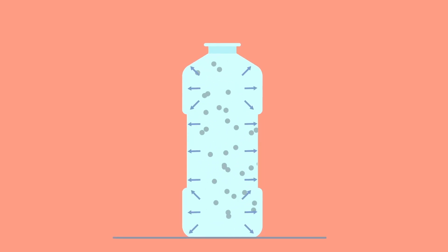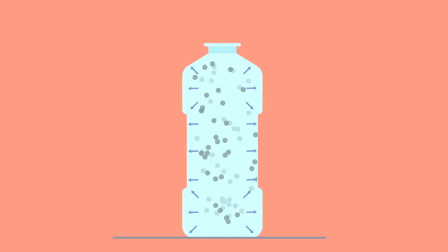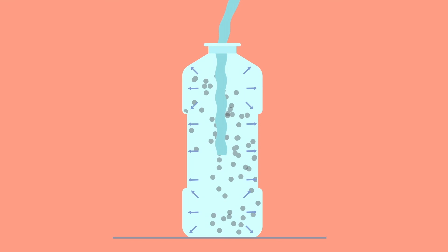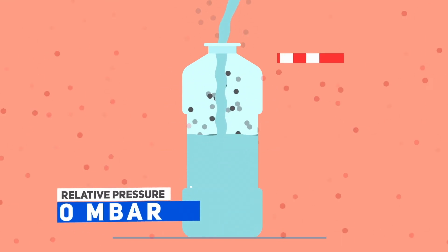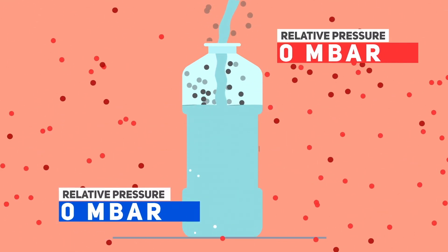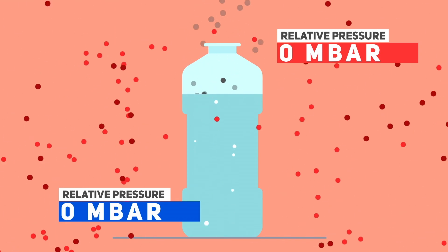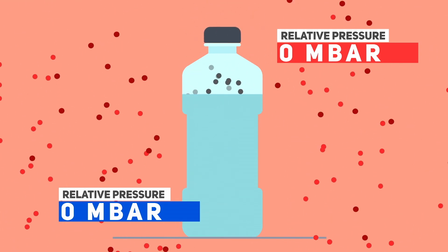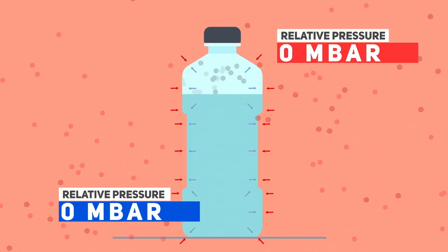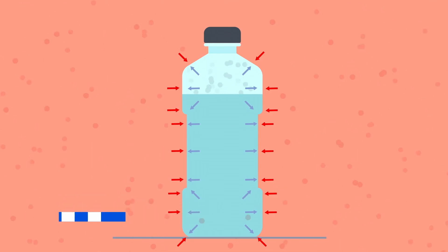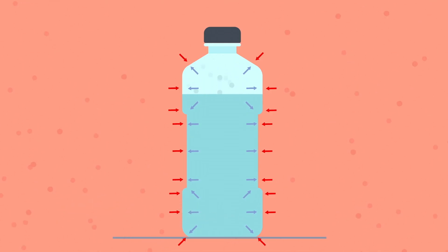The pressure gas exerts on a surface is a consequence of the movement of its molecules and the speed with which they hit the surface. In most cases, the same pressure will exist inside and outside of the package. This means that the pressures are balanced because the same amount of molecules strike each side of the wall at the same speed.